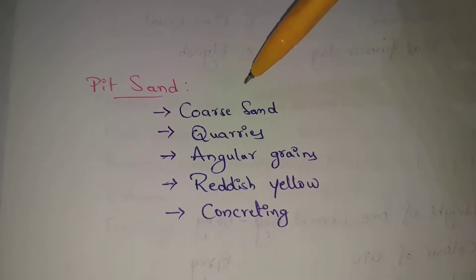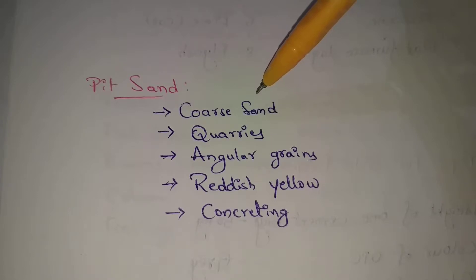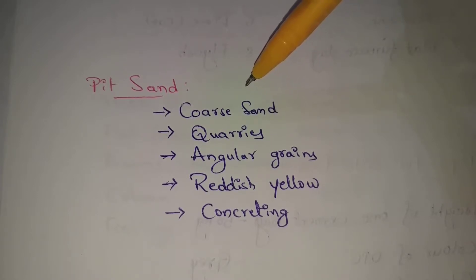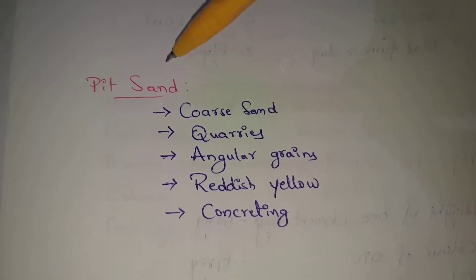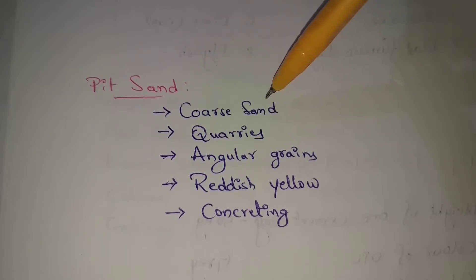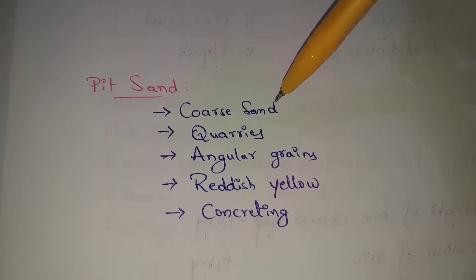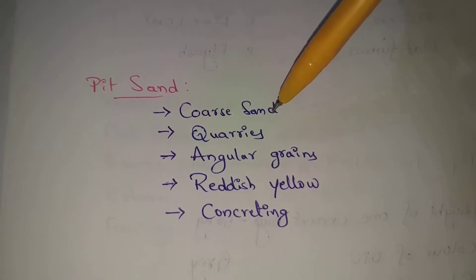Coarse aggregates include gravels, ballast, and different types. But here, pit sand — coarse sand — is a little bit of a smaller particle size. Also called coarse sand.